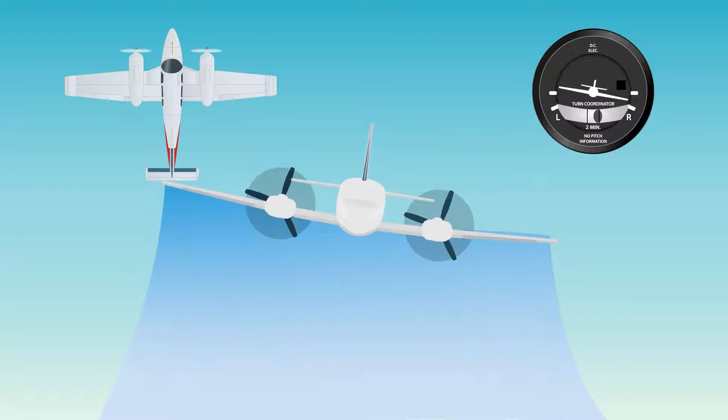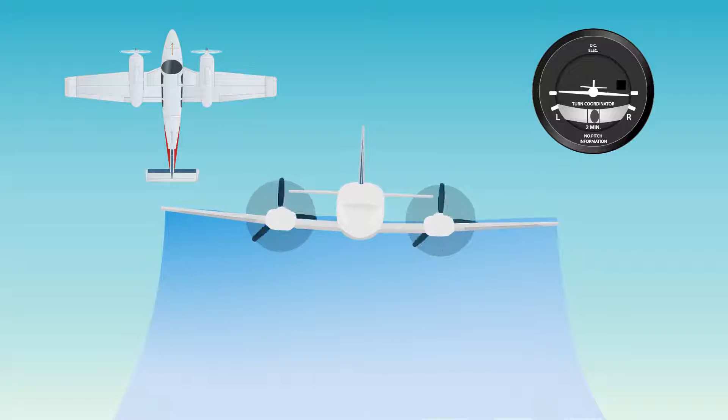With a fully operational airplane, sideslip is eliminated when the ball of the inclinometer is centered. Drag is at its minimum in this zero sideslip condition.